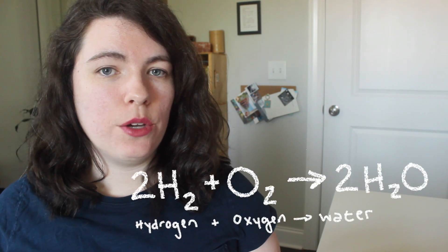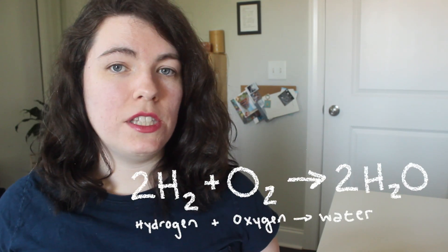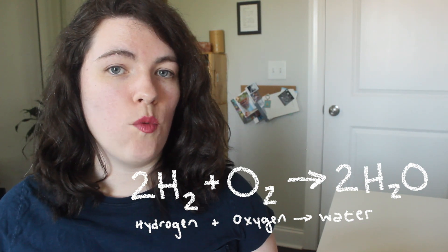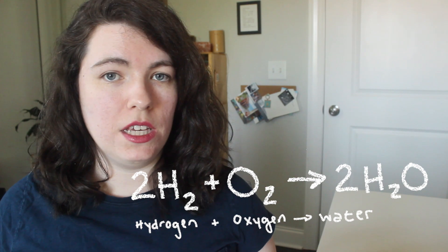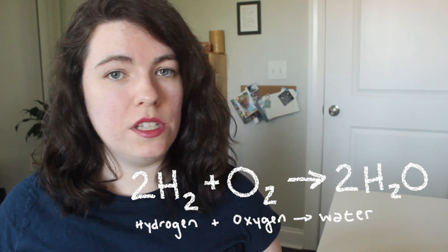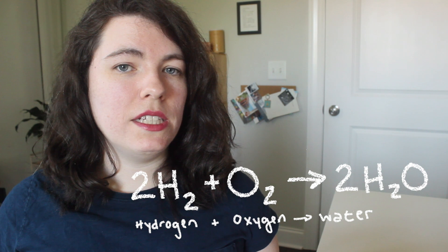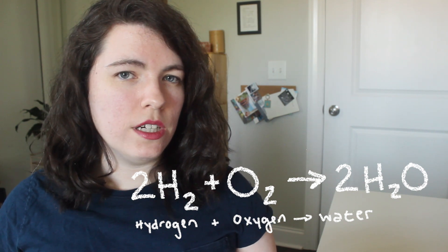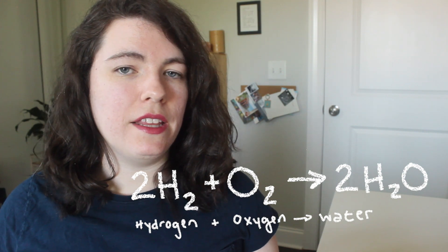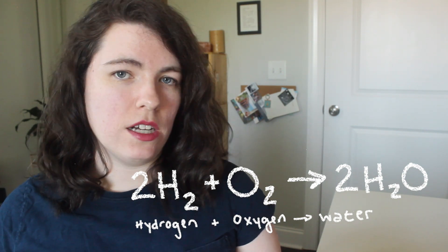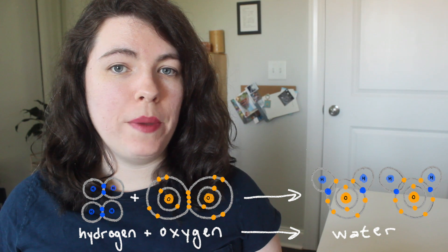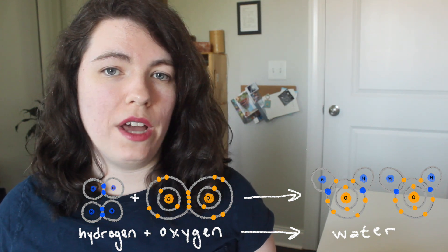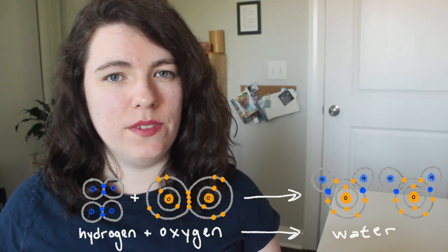Here's another example: the chemical equation for the production of water. We start with two diatomic hydrogen molecules and one diatomic oxygen molecule. The product is two molecules of water. Notice in the product that the oxygen doesn't have the subscript two anymore, because the coefficient two indicates there are two atoms of oxygen. You can think of the two pairs of hydrogen atoms each attaching themselves to one oxygen atom, as we discussed in the previous video.